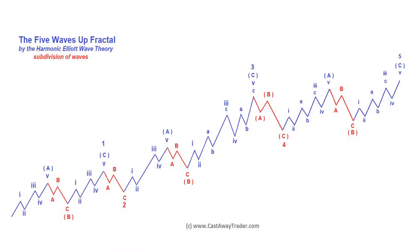Those of you who watched my previous videos know that I trade based on the harmonic alert wave theory. The foundation of the harmonic alert wave theory is the five wave fractal. This is the structure of any impulsive rally or decline — impulsive meaning in direction of the main trend. We have five waves: one up, two down, three up, four down, and five up. Every wave A and every wave C in direction of the main trend are themselves subdivided into five smaller waves.